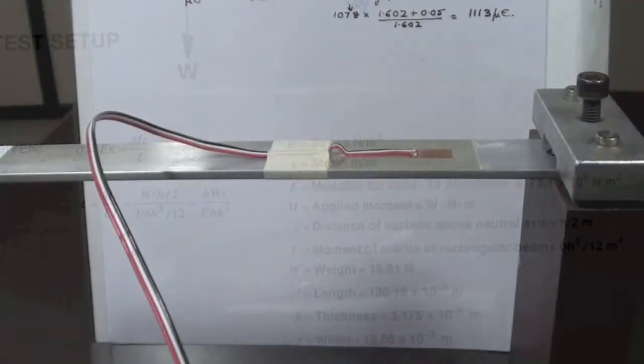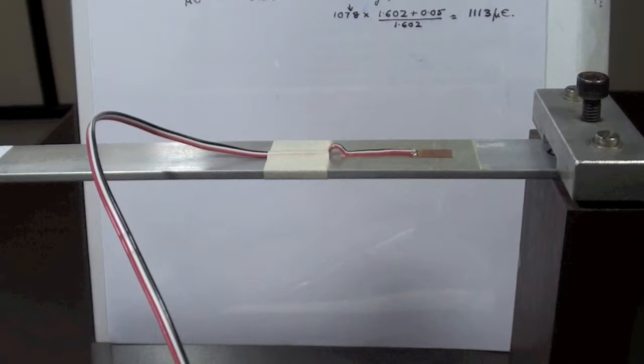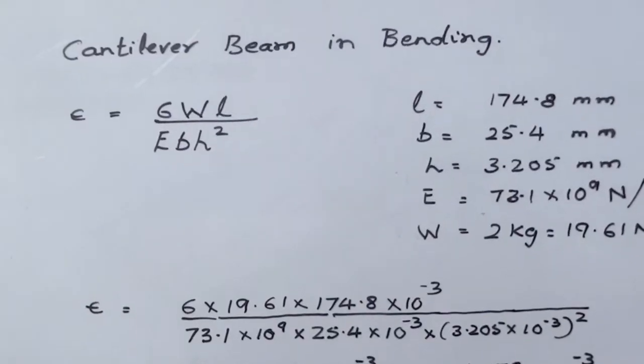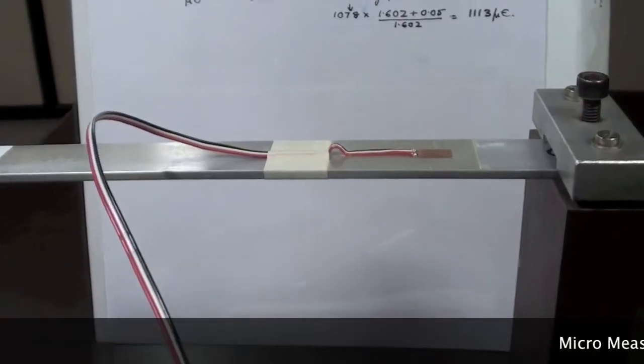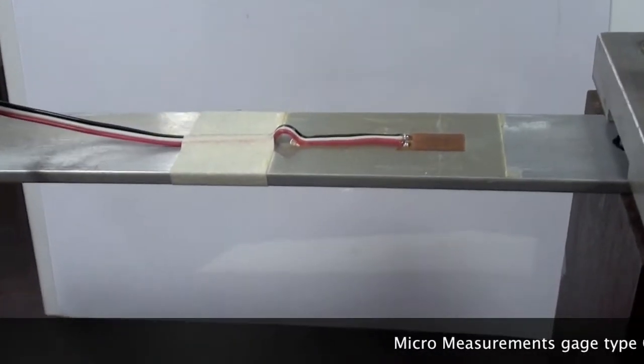Here is a beam of known dimensions for which, as per calculations, the strain should be 1113 microstrain for a load of 2 kilograms.